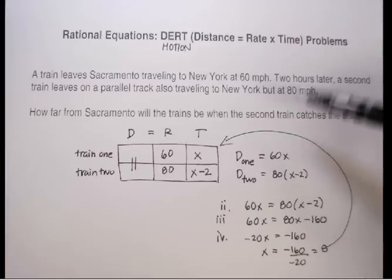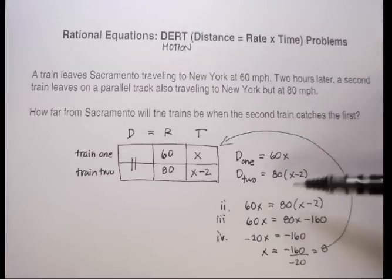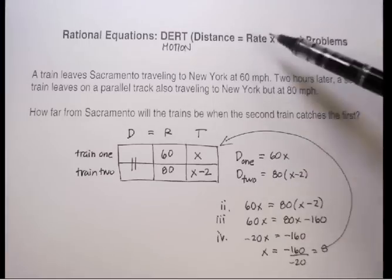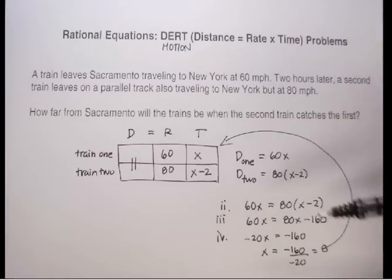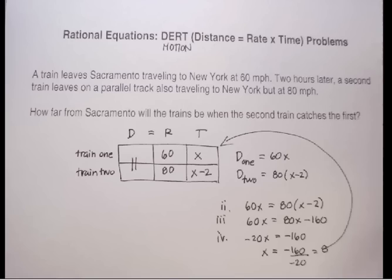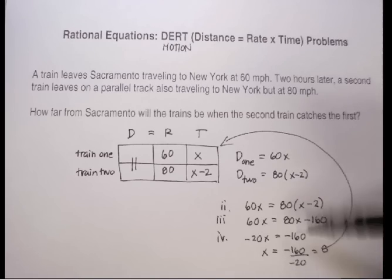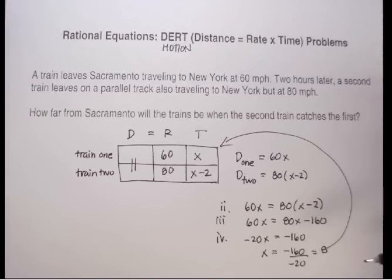These are examples of using rational equations in distance-rate-time problems. I'll go ahead and do another example for you where there might be some fractions, which makes it a little more interesting.